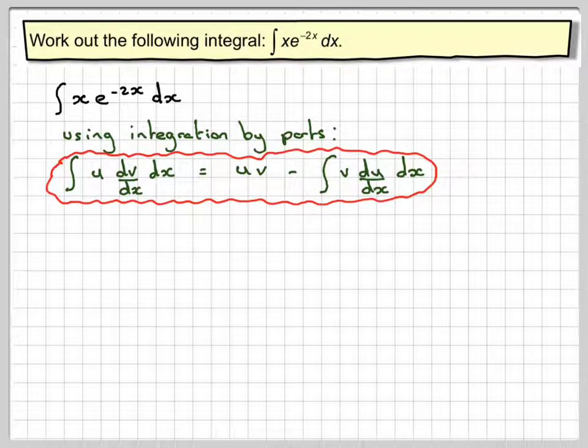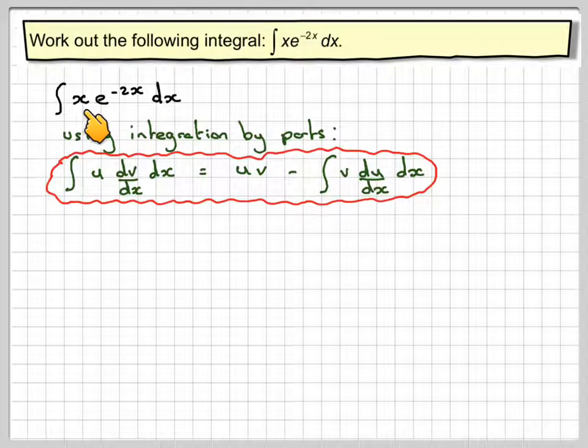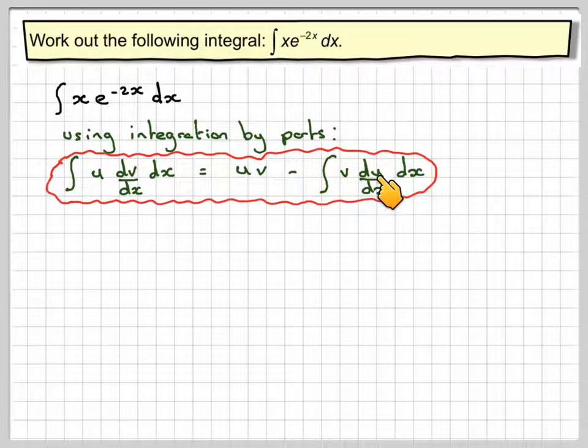You have to choose carefully what u is going to be, because u you're going to have to differentiate, and dv you're going to integrate. So the obvious choice here is to make u equal to x, because when you differentiate it, it becomes 1, and may make this integral easier.